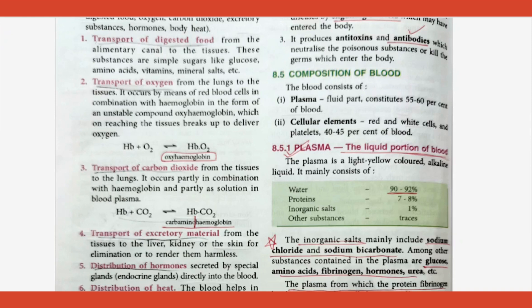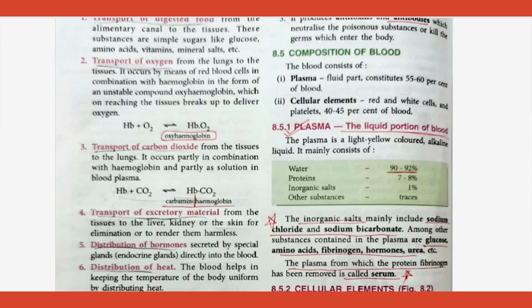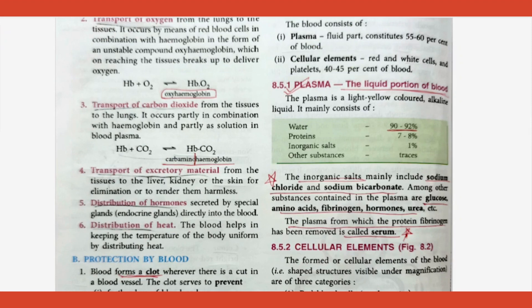For constituents of plasma, they may ask odd-one-out questions. Normal contents include water, proteins, inorganic salts — specifically sodium chloride and sodium bicarbonate — along with glucose, amino acids, hormones, and fibrinogen. Fibrinogen is very important: plasma is the liquid part of blood, and if you remove fibrinogen from plasma you get something called serum. Learn to differentiate between plasma and serum — a common two-mark question.